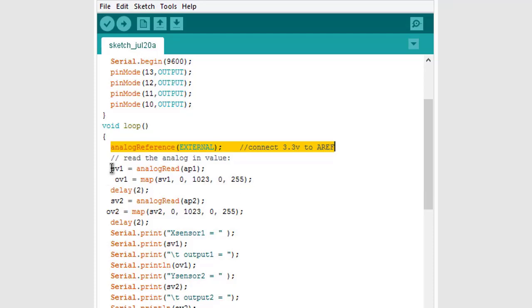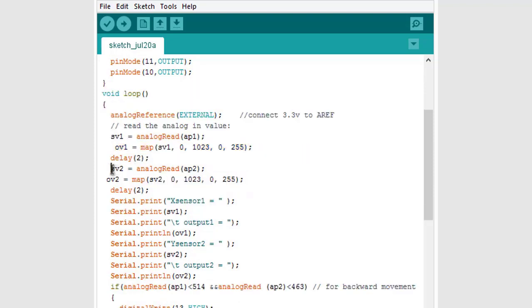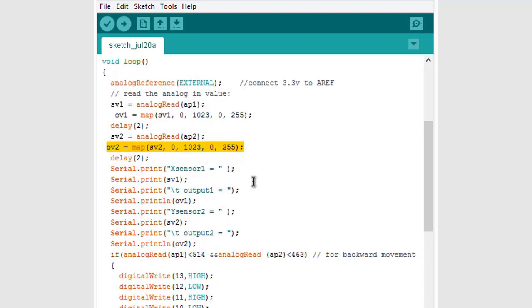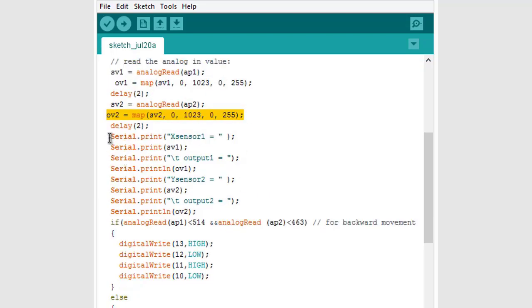We have four motions. This is just reading the analog value and we are mapping the value from 0 to 1023 to 0 to 255. We are doing the same on the Y-axis section for AP2 and OP2, also mapping this value.